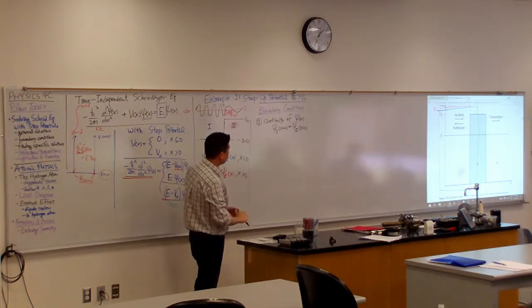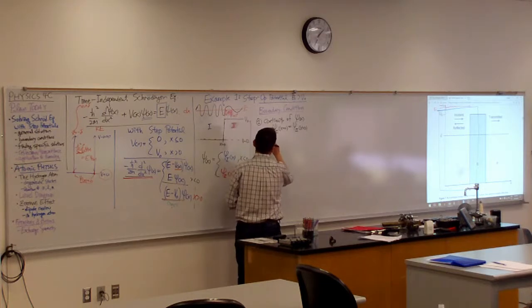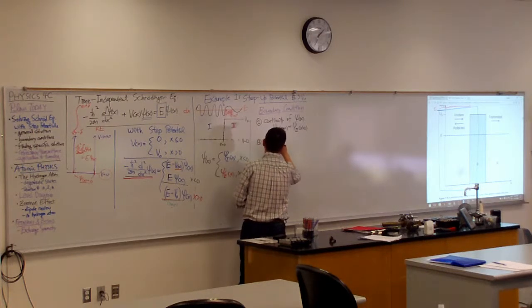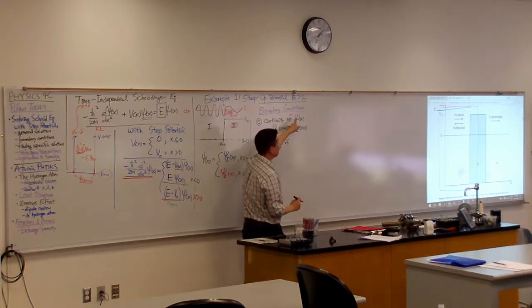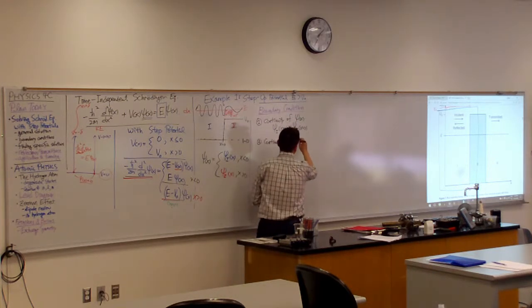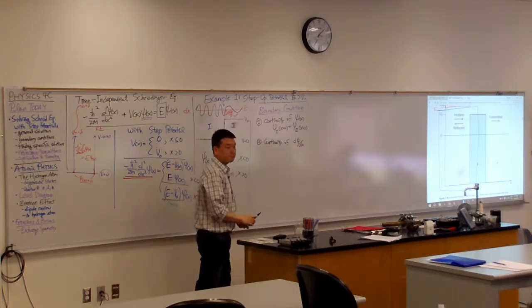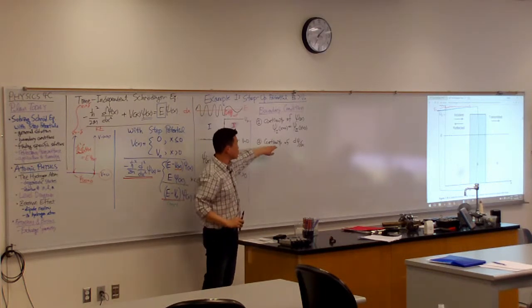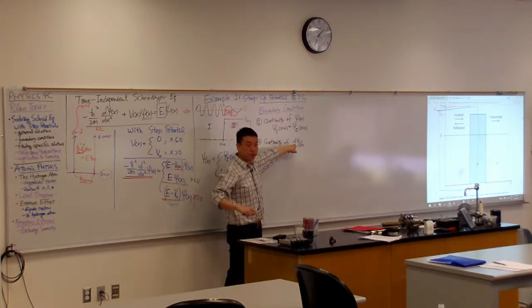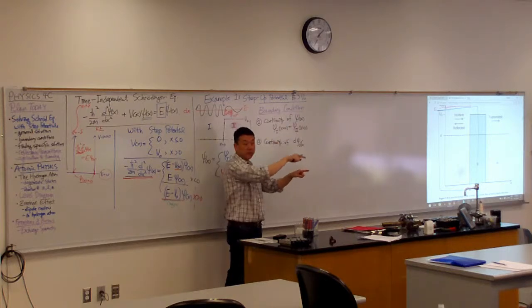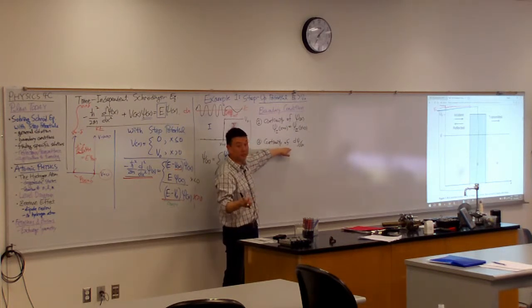So the second boundary condition actually looks a lot like this. Second boundary condition is continuity of not the wave function, but the first derivative of the wave function. Sometimes people call this smoothness of the curve. Because when the first derivative is discontinuous, you are going to get a little kink where the slope suddenly changes. This means slope cannot change suddenly.